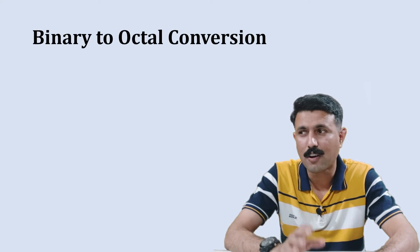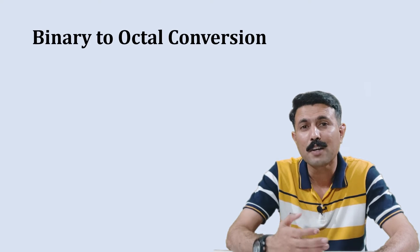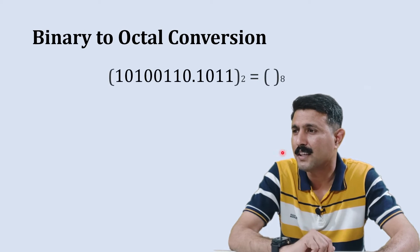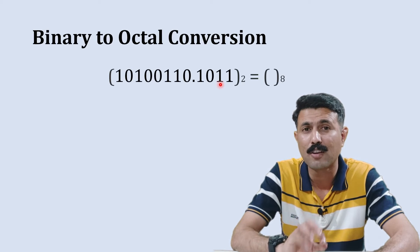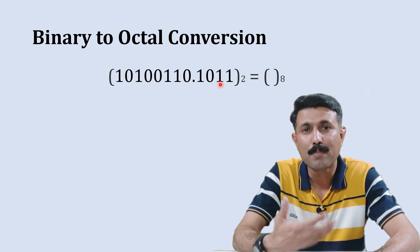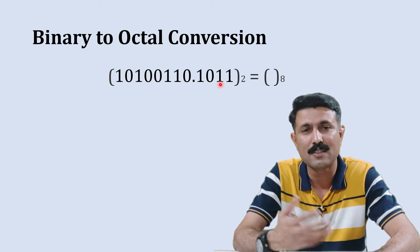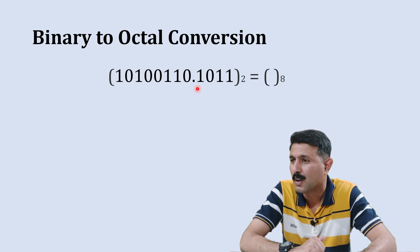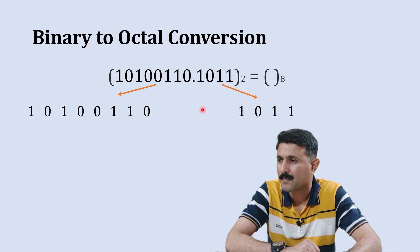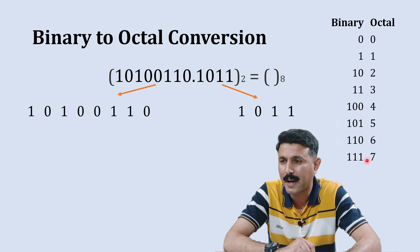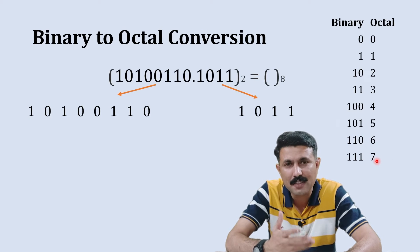First we are going to solve binary to octal conversion — how to convert a binary number into an octal number. The best way is to have an example. Here we have a binary fractional number; we are not solving a simple binary number but a binary fractional number. By default, you will learn both things: normal numbers as well as fractional numbers. We'll segregate the two sides, and here I am showing you a binary-octal table.